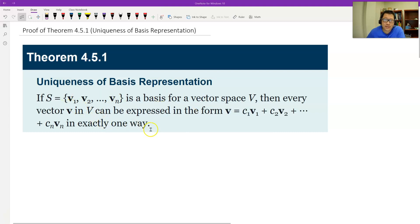The theorem says if we have a basis for a general vector space, any vector in the space can be only one unique linear combination of the basis. That's what we call uniqueness.